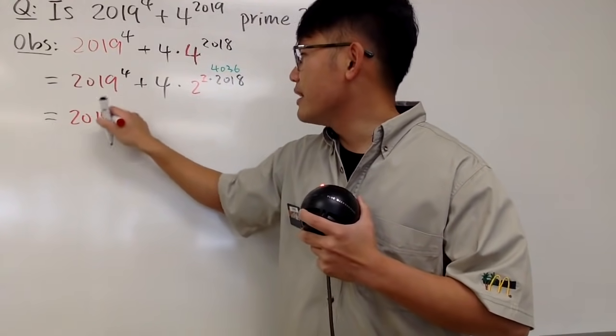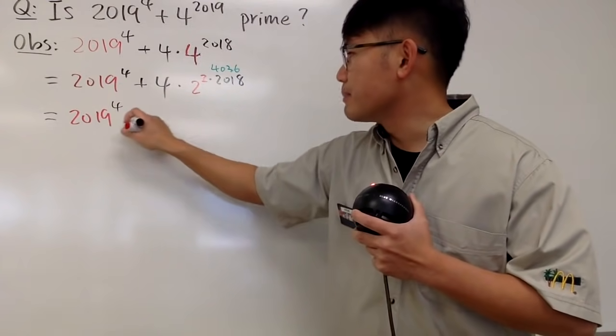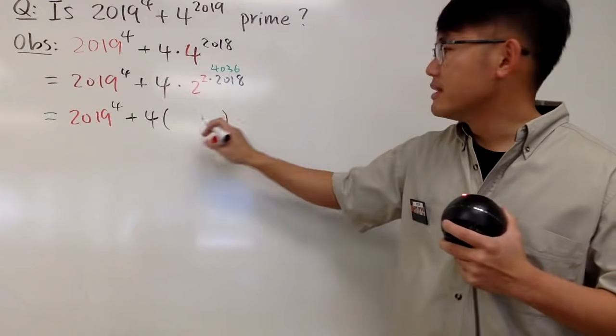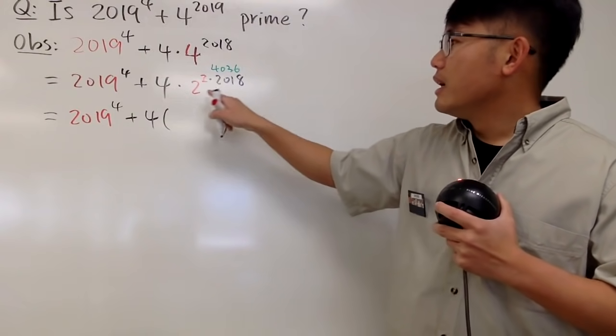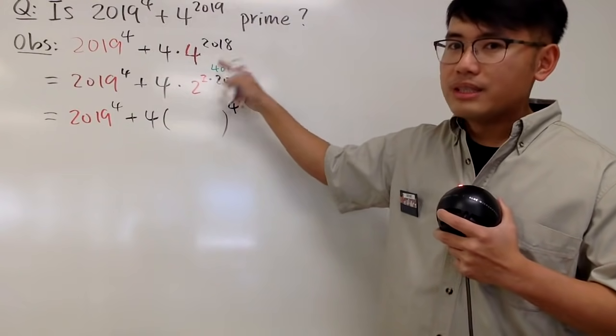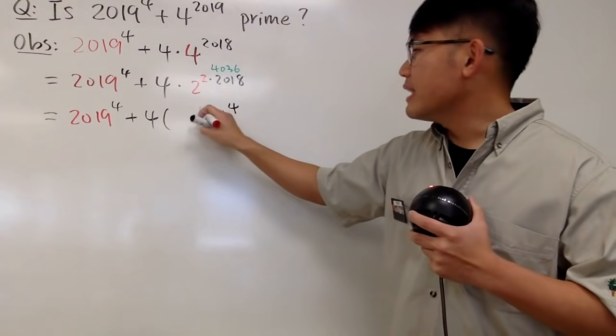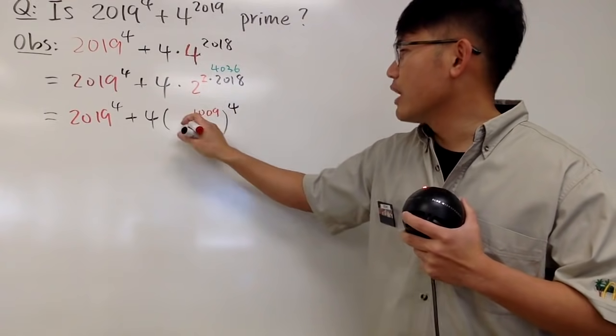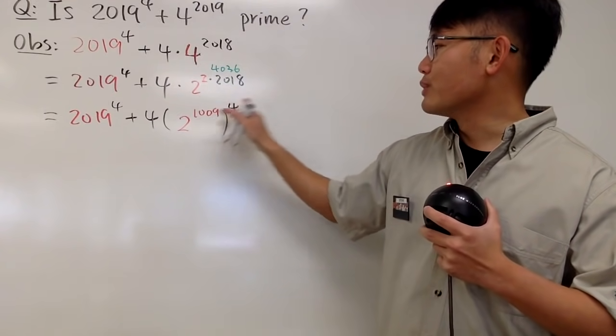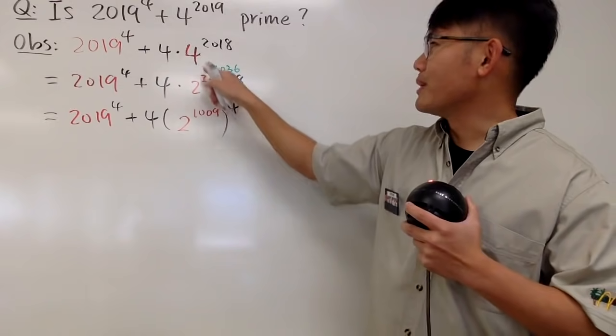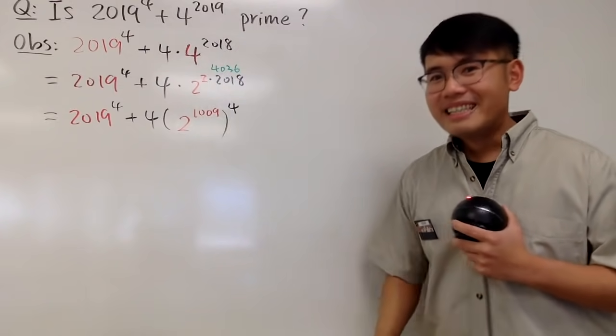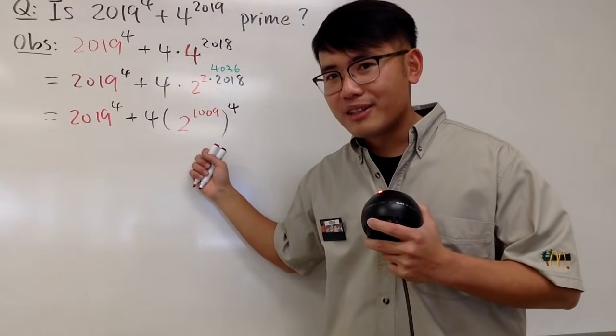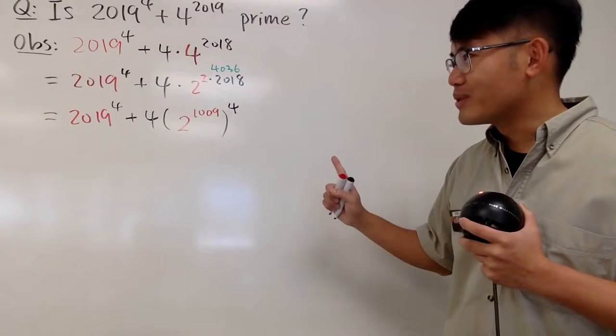And as you can see, we can write this down again as 2019^4, and this is plus 4. Well, I want to look at this as something to the 4th power. This right here, all I have to do is divide it by 4, so the inside power will be 1009. And don't forget, we still have the base 2 right here. So, 2 to this power to this power is 2 to this power, namely this, right here. So, here's the deal. In fact, this right here is factorable, and I'll show you guys how to do it.